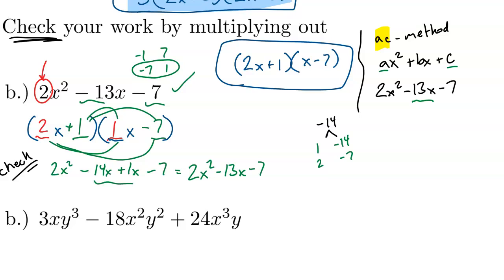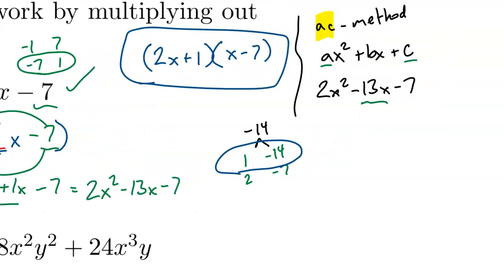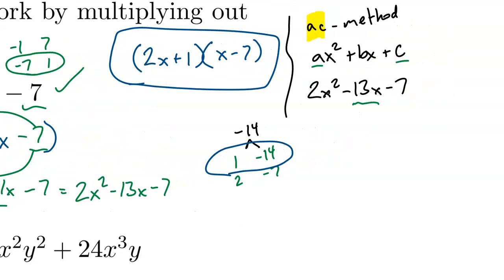Once I have this factor pair that works, this is a very special factor pair. What I'm going to do is use those two numbers, 1 and negative 14, to split the negative 13x into two separate terms: negative 14x plus 1x. Now I have four terms and I can factor them by grouping.